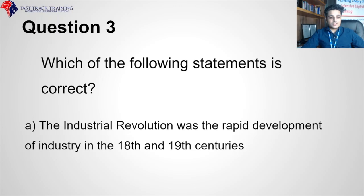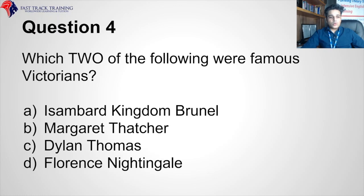Which two of the following were famous Victorians? Isambard Kingdom Brunel, Margaret Thatcher, Dylan Thomas, or Florence Nightingale? The correct answer is Isambard Kingdom Brunel and Florence Nightingale.